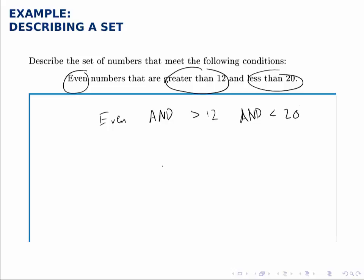So of course, this is a small enough list that we can just list these numbers. The even numbers that are greater than 12, so that would start at 14, 16, and 18.